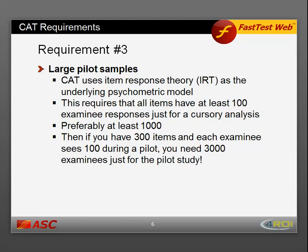CAT also requires large pilot samples. CAT uses item response theory, also known as IRT, as the underlying psychometric model. To analyze data with IRT, you need at least 100 examinee responses per item for a basic cursory analysis, and preferably at least 1,000. So if you have 300 items in your bank and each examinee sees 100 items during piloting, you will need 3,000 examinees just to complete a pilot study for CAT.